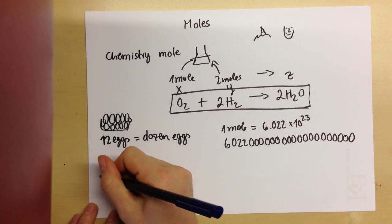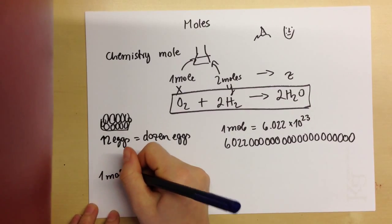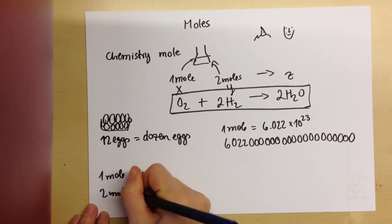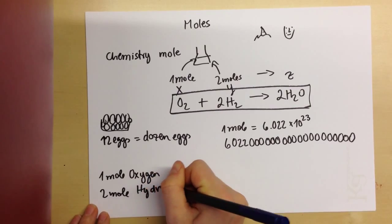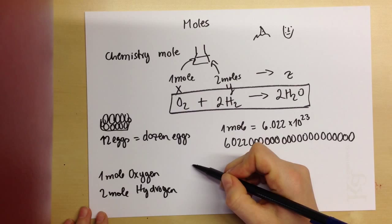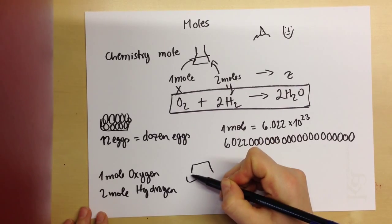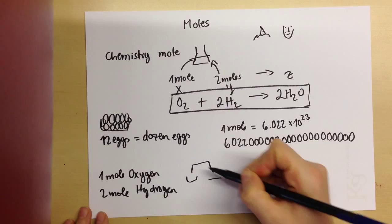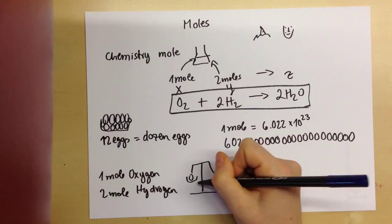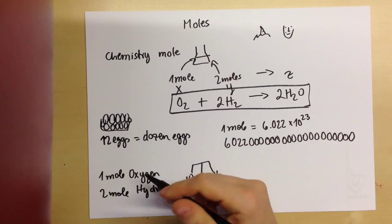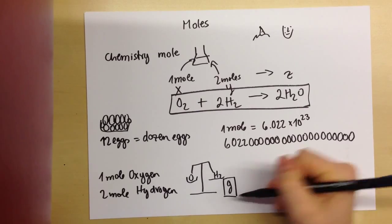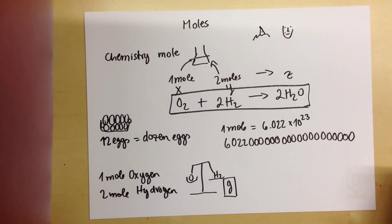Well, as a chemist, I would say, let's take one mole oxygen, two mole hydrogen, and then I could get onto my scale and I could measure the hydrogens here and the oxygens here and measure it in grams, which is a lot more comfortable for most of us.